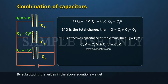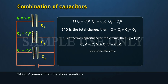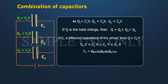By substituting the values in the above equations, we get Cp V equals C1 V plus C2 V plus C3 V. Taking V common from the above equations, Cp equals C1 plus C2 plus C3.